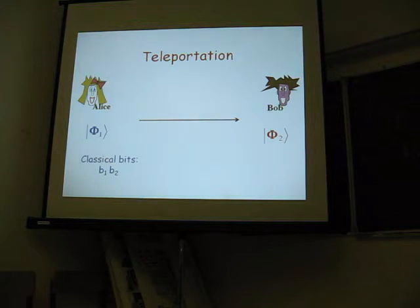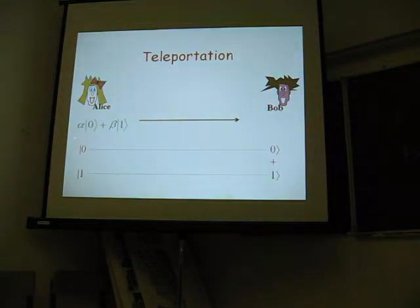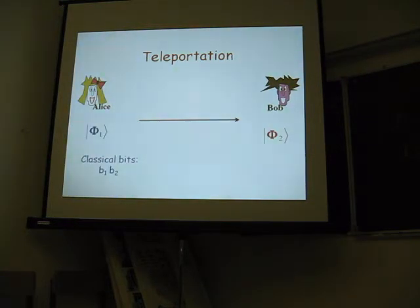Because teleportation is the following. It says there is a measurement that Alice can do to her system, so to the unknown qubit plus the EPR pair, one half of the EPR pair, which will result in two classical bits, B1 and B2, that she can send to Bob. And then, because of the measurement, his system somehow has collapsed, and when he knows what B1 and B2 are, he can apply a unitary, one out of four unitaries to his system. And when he does that, he miraculously has the unknown qubit in his hands.